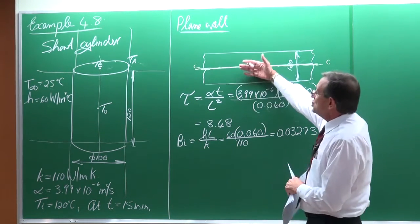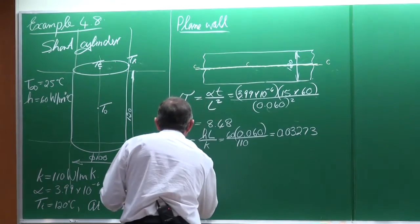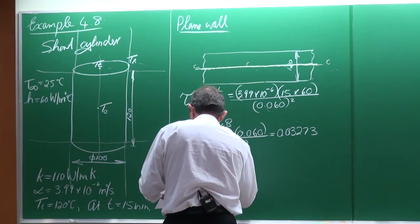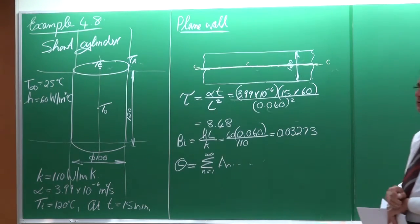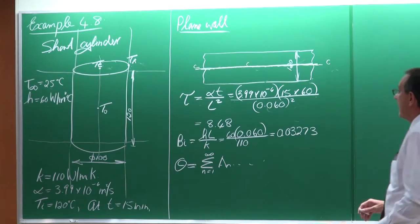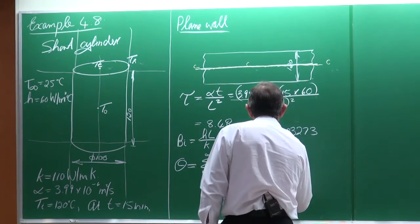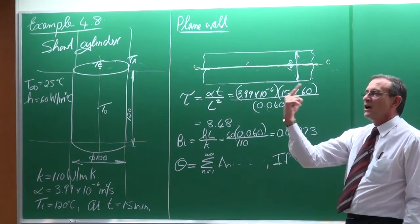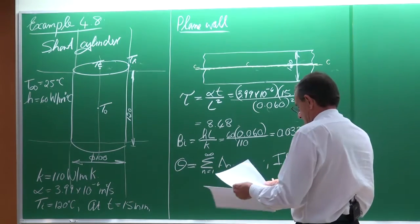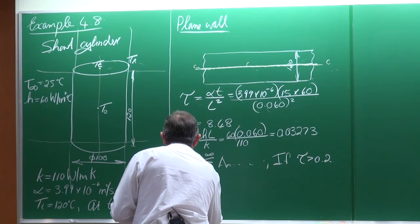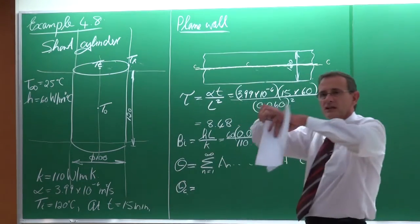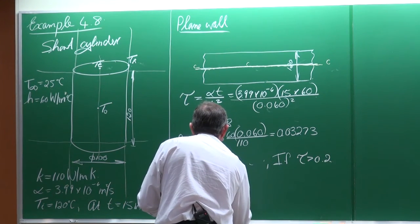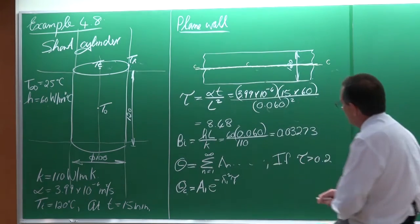The Biot number equals the heat transfer coefficient multiplied by L divided by K. That is 60 × 0.060 divided by 110, giving a Biot number of 0.03273. Remember, the solution for this plain wall is an equation which says the non-dimensionalized temperature is the sum from n=1 to infinity of Aₙ terms. However, since tau is larger than 0.2 — and tau equals 8.48 — we only have to use the first term.